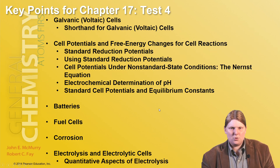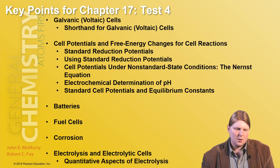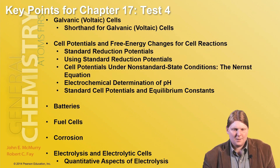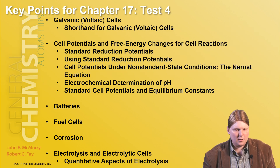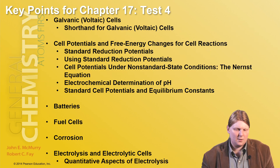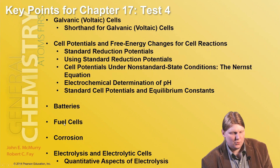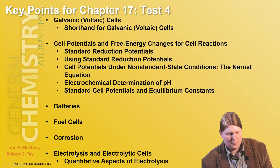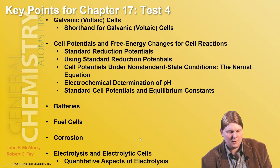Some key points for Chapter 17 for Test 4: galvanic or voltaic cells, shorthand for how to write them out, cell potentials and free energy changes for the reactions, looking at standard reduction potentials, the electrochemical determination of pH, the relationship between cell potential and equilibrium constants, a little bit on batteries, fuel cells, and corrosion, and finally ending off with electrolysis and electrolytic cells.